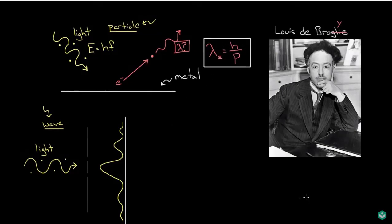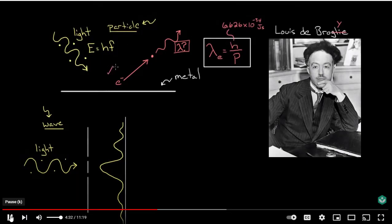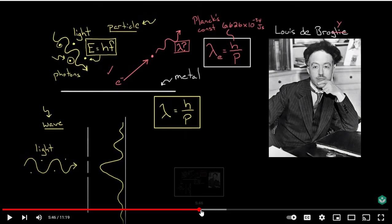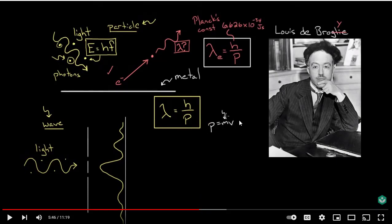Why did he pick Planck's constant? If you're not familiar with it, Planck's constant is just a constant — always the same value: 6.626 times 10 to the negative 34 joule-seconds. It's really small. This was a constant discovered in other experiments like the photoelectric effect. And our book is more specific, because we know momentum is mass times velocity, so we'll be looking at Planck's constant over mass times velocity.